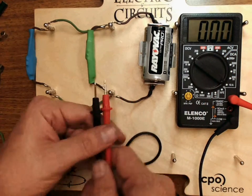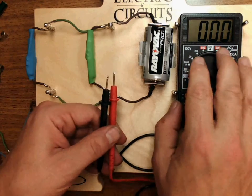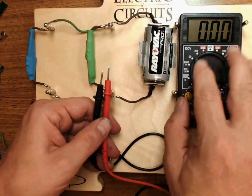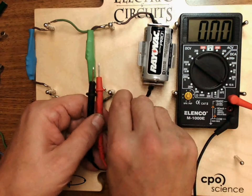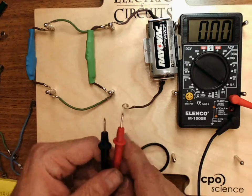To measure the current I need to insert the meter into the circuit. So the circuit must be closed by the meter. The meter becomes the switch. So I'm going to unhook this battery, and now...